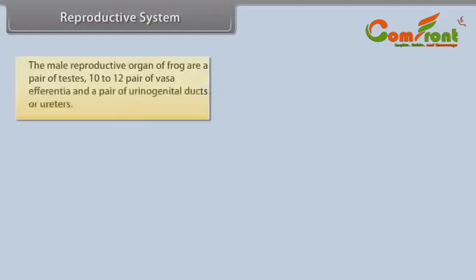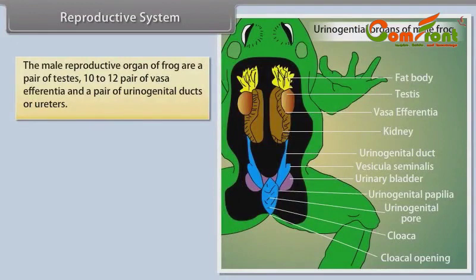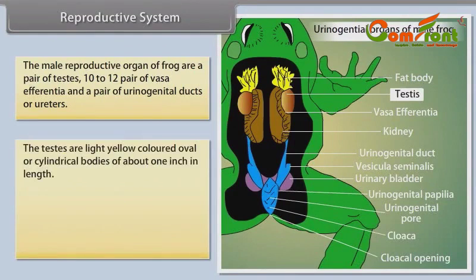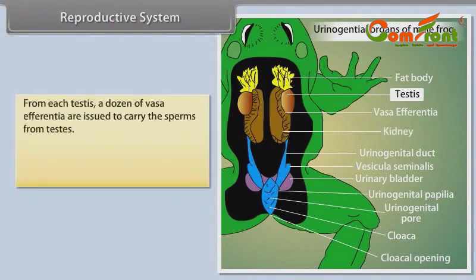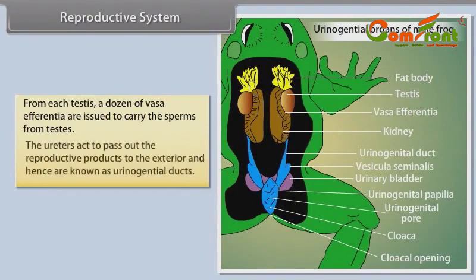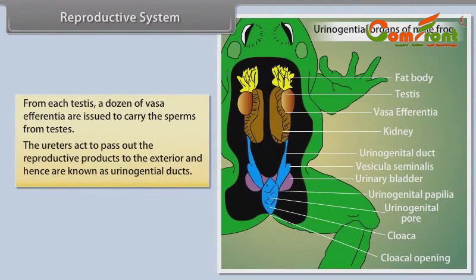Reproductive System — Male: The male reproductive organs of the frog are a pair of testes, 10–12 pairs of vasa afferentia, and a pair of urinogenital ducts or ureters. The testes are light yellow-colored, oval or cylindrical bodies about 1 inch in length, attached to the ventral surface of the kidney at the anterior end by a fold of peritoneum known as mesorchium. From each testes, a dozen vasa afferentia carry sperm from the testes. The ureters act to pass out reproductive products to the exterior and hence are known as urinogenital ducts.